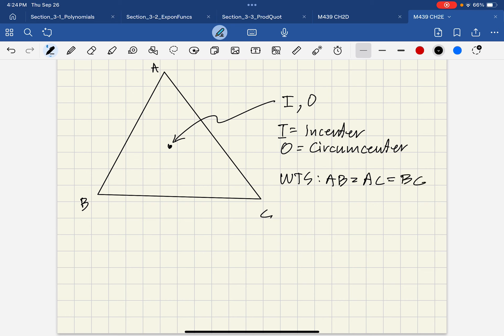So that's the givens, so here's the sketch of the proof. So here's the sketch of the proof. Let's see. O, B is going to have to be equal to O, A. O, B is going to have to be equal to O, A. Okay.